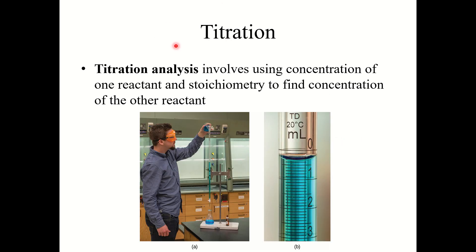Titration analysis involves using the concentration of one reactant and the stoichiometry to find the concentration of the other reactant. We'll be doing this in lab in our determination of acetic acid lab.